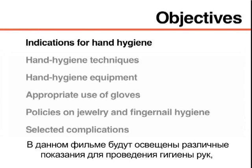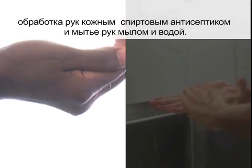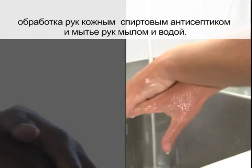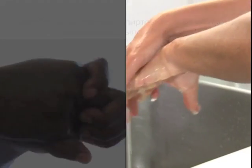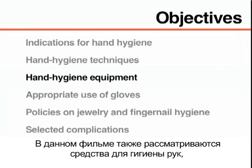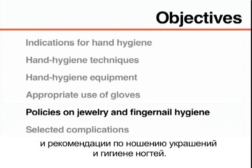This video will demonstrate the various indications to perform hand hygiene as well as two different hand hygiene techniques: hand rubbing with an alcohol-based hand rub formulation and hand washing with soap and water. This video will also review hand hygiene equipment, the appropriate use of gloves, and policies on jewelry and fingernail hygiene.